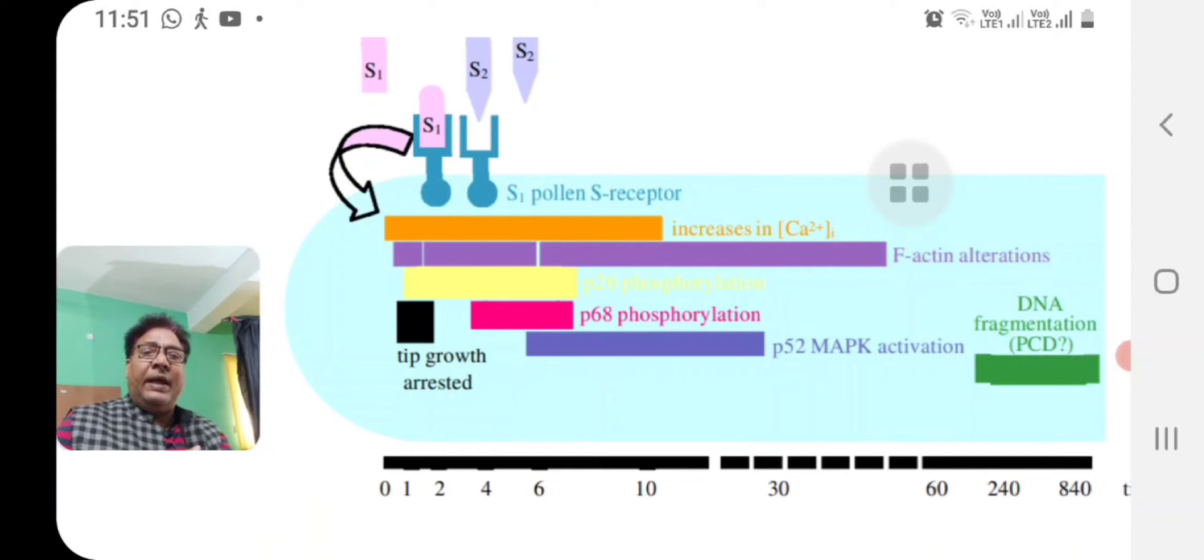Immediately this reaction takes place, which leads to actin filament depolymerization, because changes in the overall structure of the pollen tube are taking place. Actin filaments are very crucial. If they are depolymerized, then further growth of the pollen tube will be inhibited. On the other hand, there are some pyrophosphorylases which are activated. There is an activation of p68 at about four minutes after the pollination process.